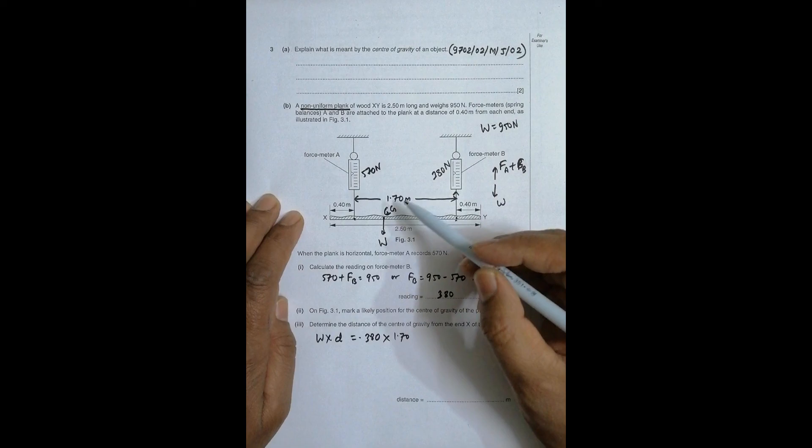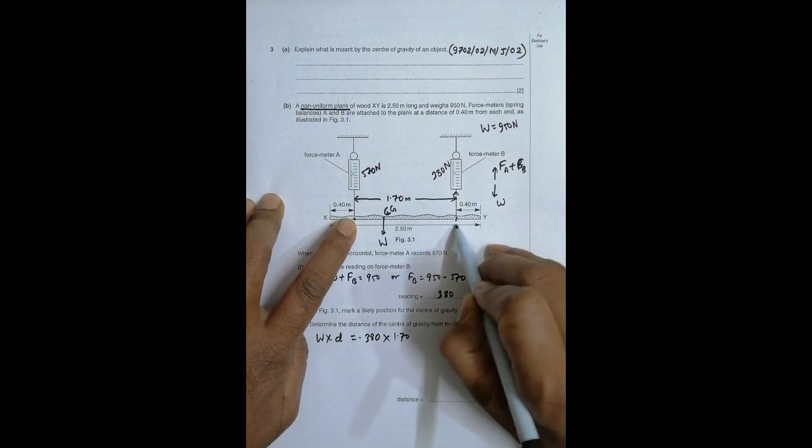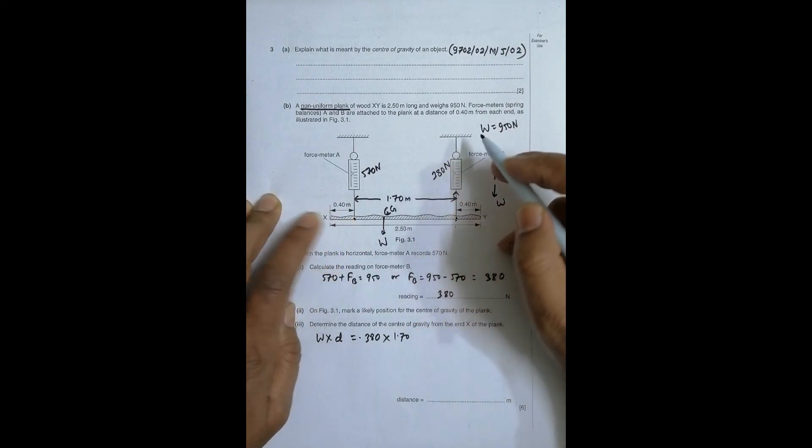So from here to here it is 1.70. Let me remind that this weight will try to move this thing in clockwise sense, and this force will try to move it in anticlockwise sense. That's why I matched it.